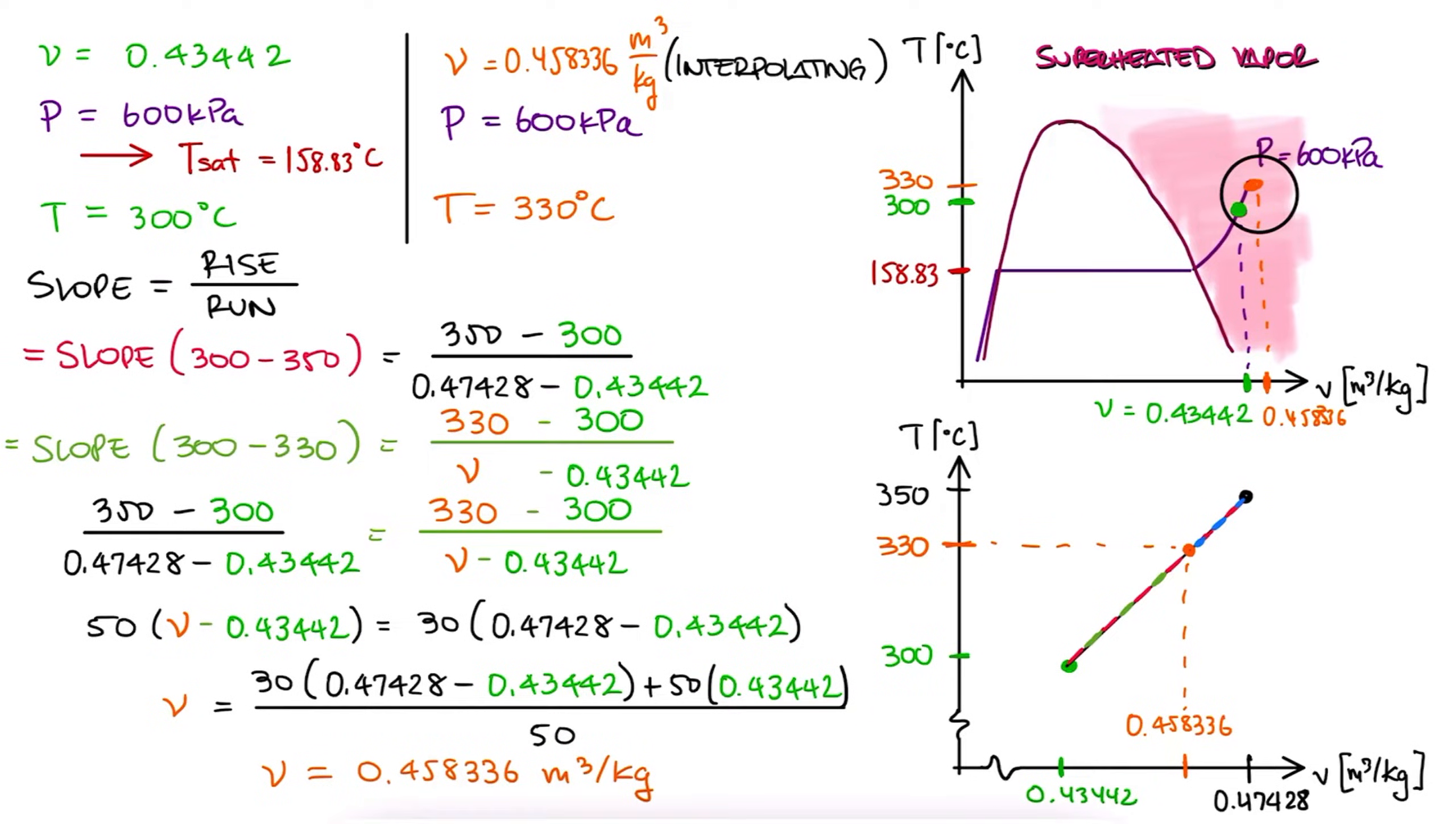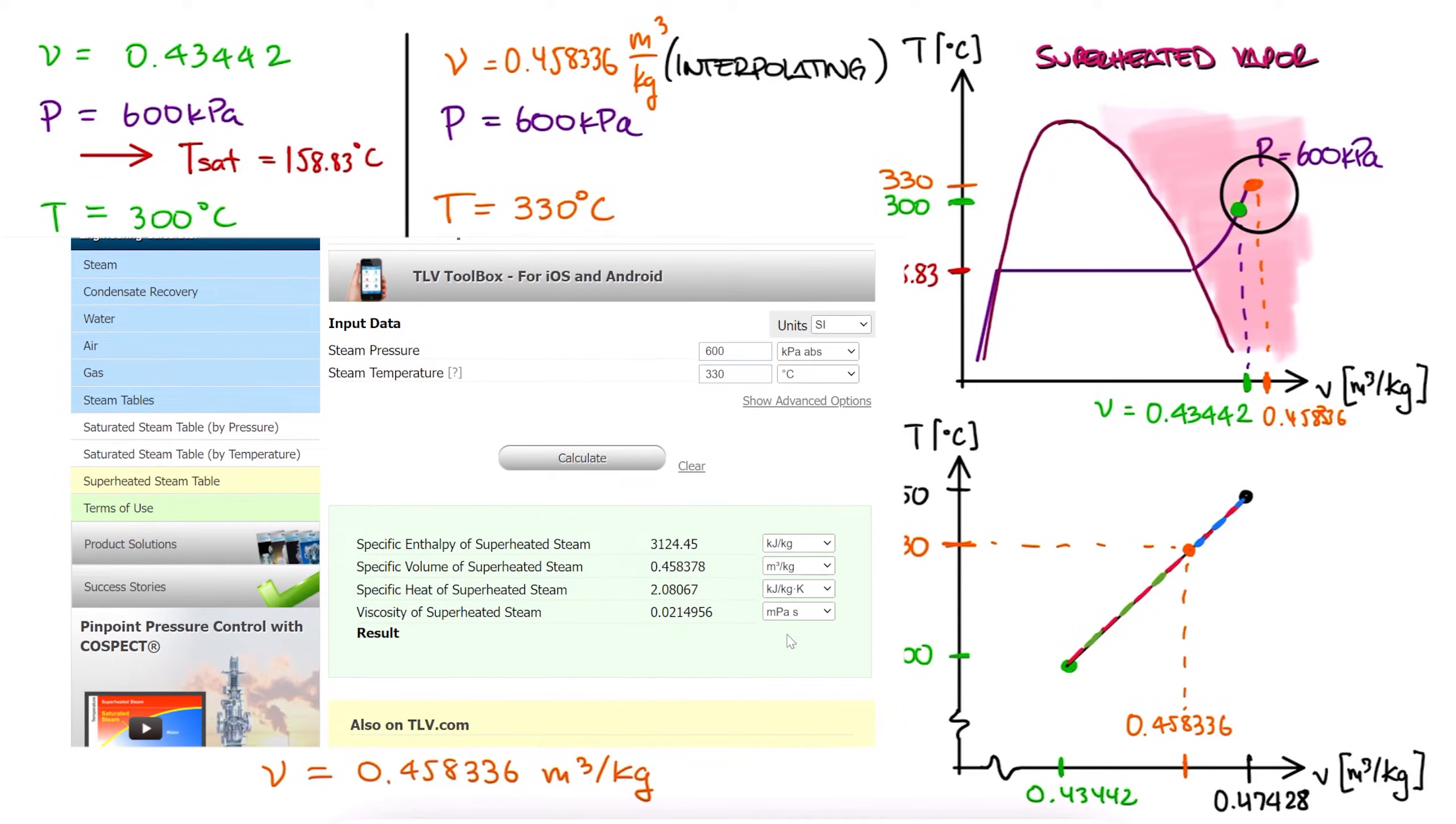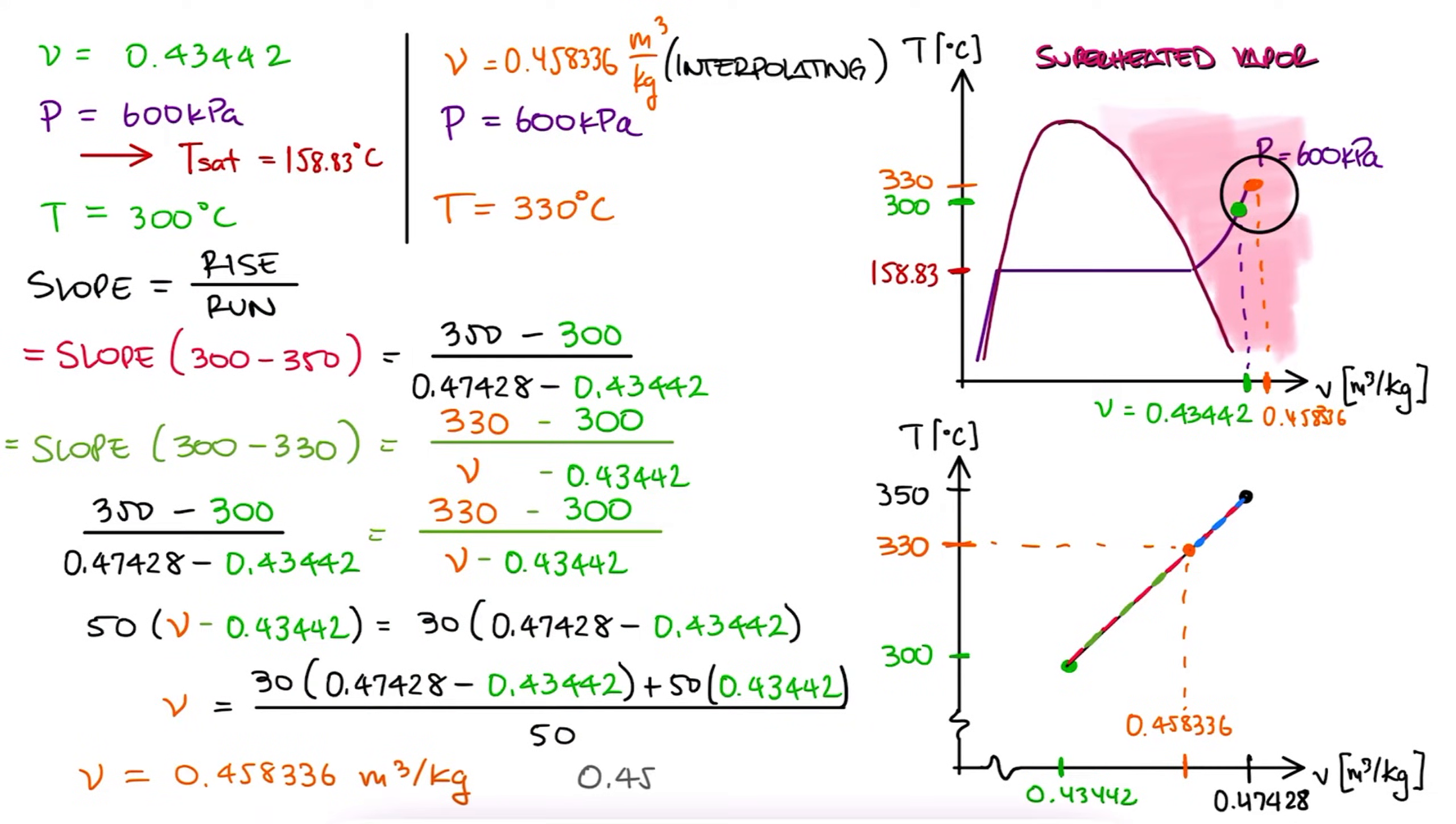If we use any resource online, we can click on the Superheated Steam Table option on the left pane and input our pressure and temperature values, in this case 600 kilopascals and 330 degrees Celsius. Just make sure that the units are what you need. And done, we have our specific volume of 0.45 cubic meters per kilogram. This is close, but not identical to our interpolation, and it's most of the time a lot quicker than interpolating.